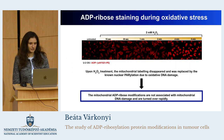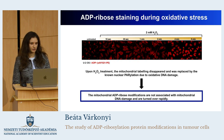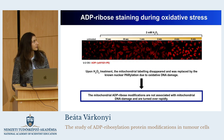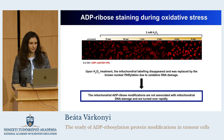One of the major processes in which ADP ribosylation is known to be involved in is DNA damage response, and the mitochondria also has DNA, so we treated cells with hydrogen peroxide, a substance known to cause DNA damage. In the treated cells, we could observe that within a couple of minutes, the mitochondrial staining disappeared, and it was replaced by the known nuclear DNA damage-associated poly-ADP ribosylation. This meant that mitochondrial ADP ribosylation is not associated with mitochondrial DNA damage, and that it is turned over rapidly.